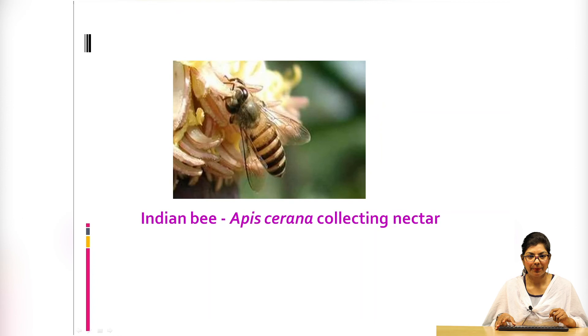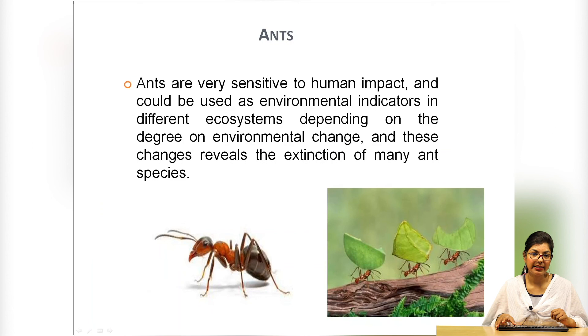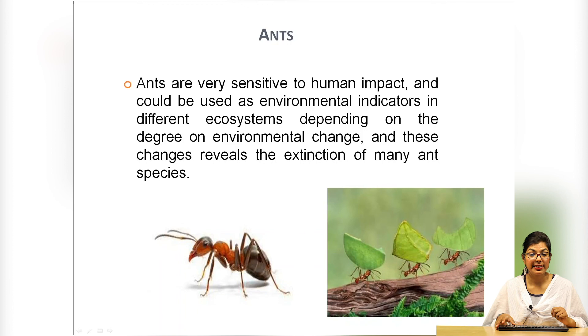Bumble bees and carpenter bees are also pollinators belonging to order Hymenoptera. Ants also act as bioindicators — they are very sensitive to human impact and could be used as environmental indicators in different ecosystems, depending on the degree of environmental change, which can reveal the extinction of many species.